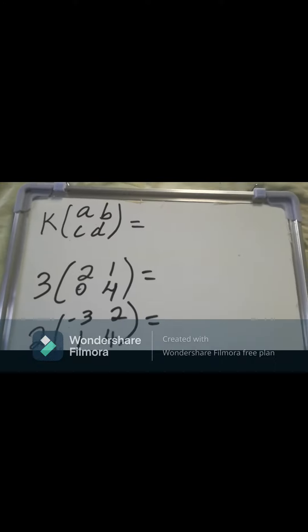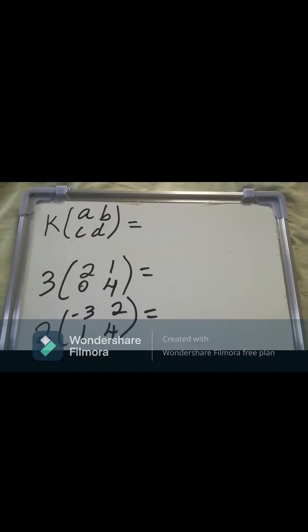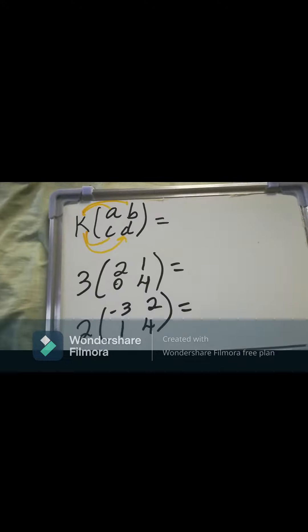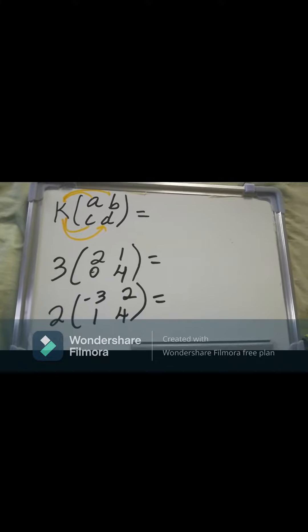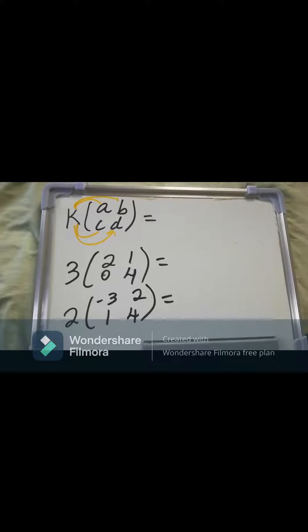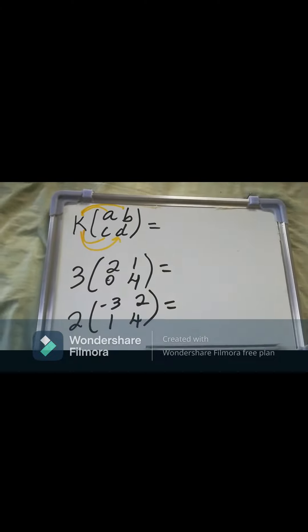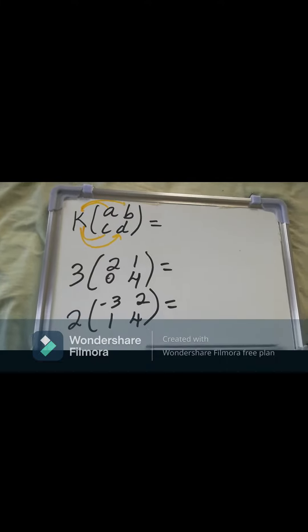Now when doing a scalar multiplication, the whole number gets multiplied by each element of the matrix. That just means that the K gets multiplied by the A, the K then gets multiplied by the B, the K is multiplied by the C, and of course the K gets multiplied by the D, to formulate our new matrix.